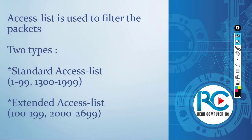The access control list is a great feature that we use to filter packets. It can filter all packets or specific packets — just TCP, UDP, or ICMP packets. We have two types of access lists: standard and extended.